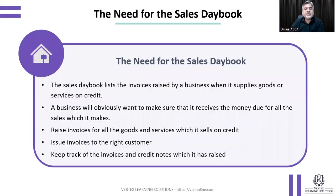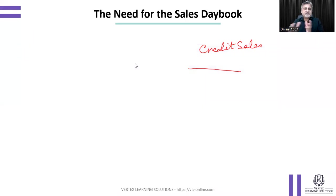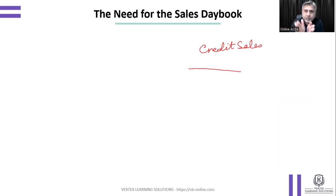Why do we need the sales daybook, and why do we keep it separately? You might be thinking that sales are sales — why do I separate them? Why can't I write them all in one book? Why do I put them separately?